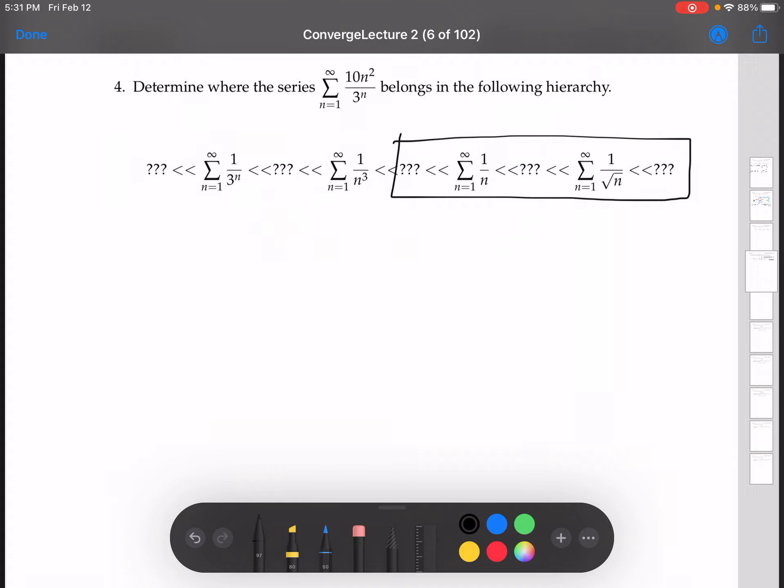But we're going to suppose that we're over here. So suppose that 1 over n cubed is smaller than 10n squared over 3 to the n.